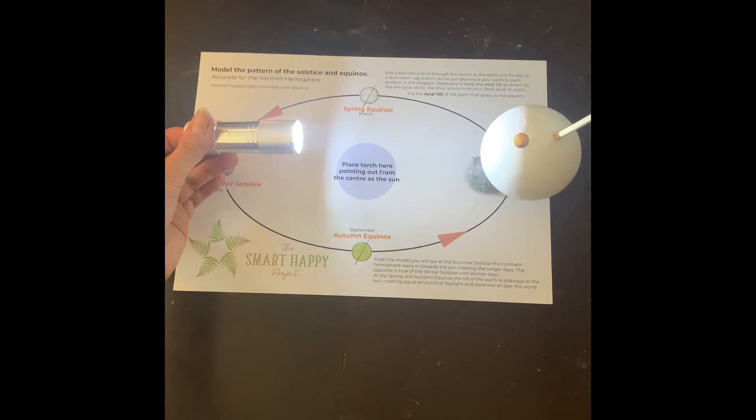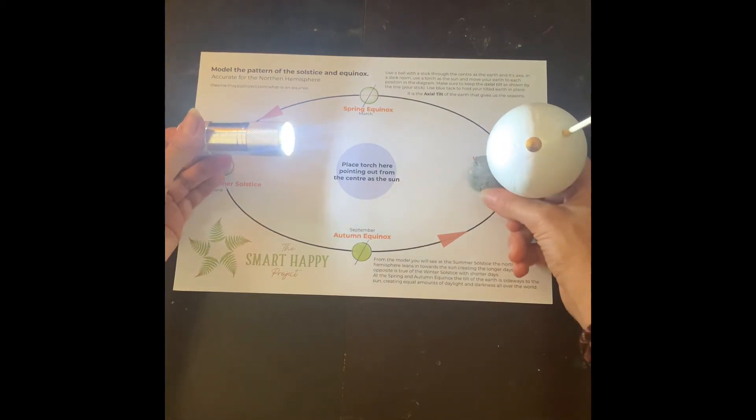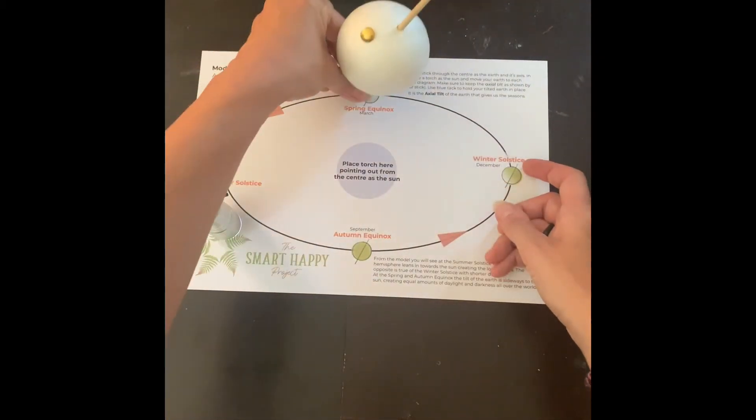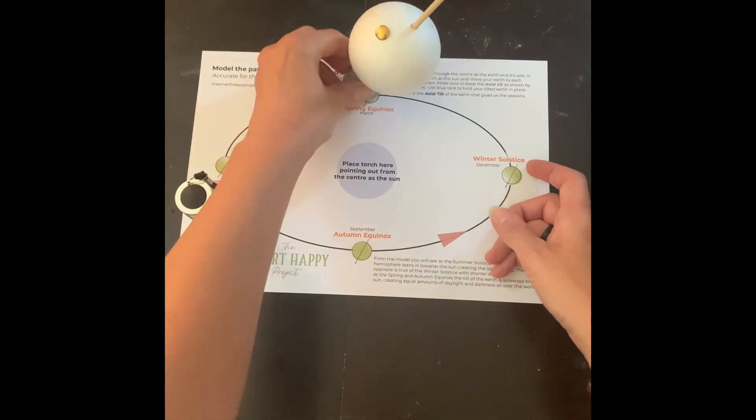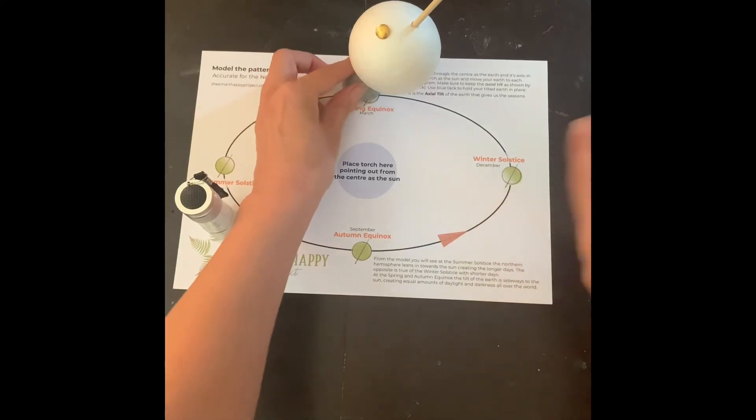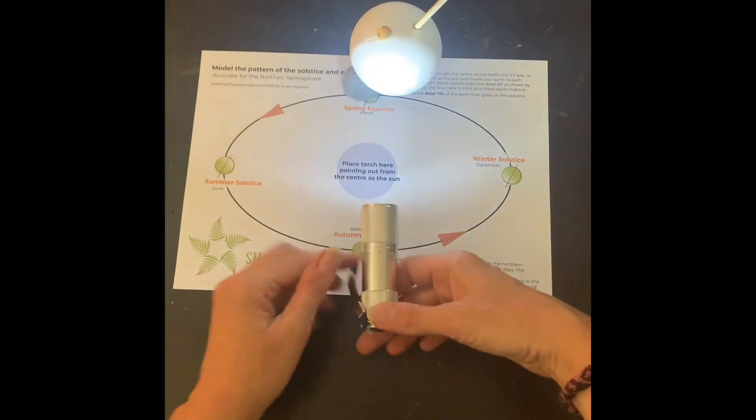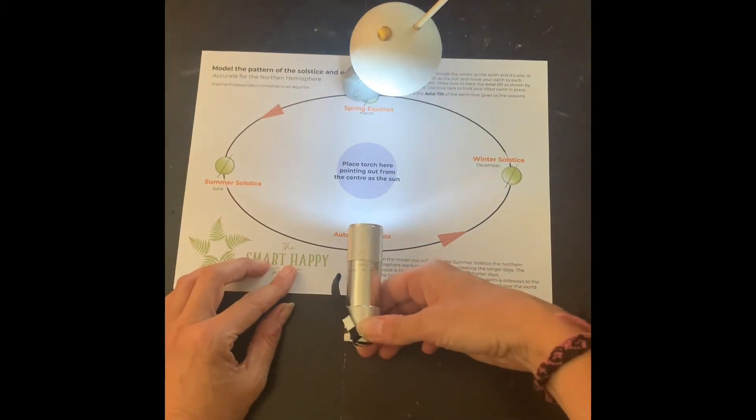So there you go, that is your model of the solstice and the equinoxes. So just to show you the equinoxes, the spring equinox is up here. So again we're leaning - for the winter solstice we were leaning away from the sun in northern Europe, for the summer solstice we're leaning towards the sun.